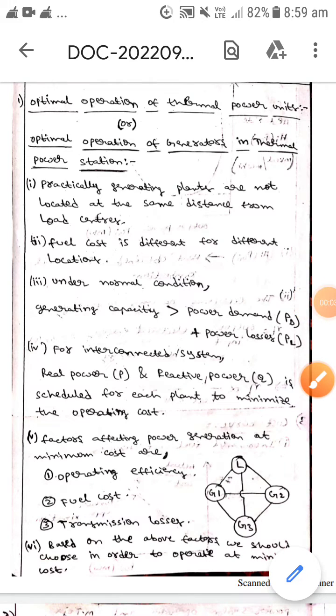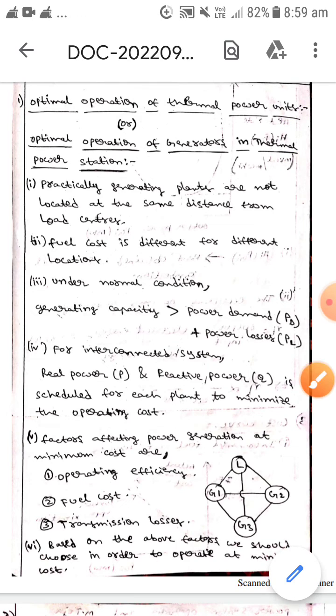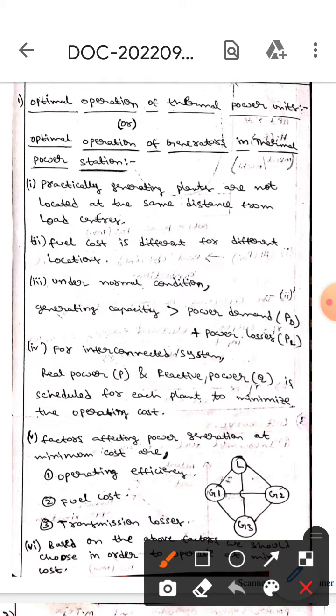Hello guys, I hope you're all fine. Today we are here to discuss optimal operation of thermal power units or optimal operation of generators in thermal power station. Let's get into the topic. Practically, general plants are not located at the same distance from load centers, so fuel cost is different for different locations.